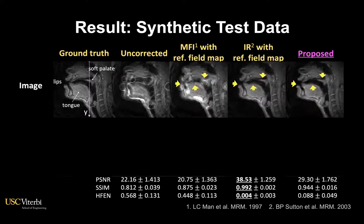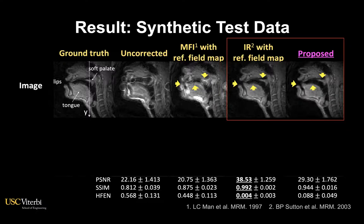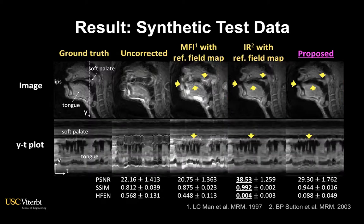We apply different existing methods to this test data. The proposed CNN method successfully removes the blurring artifact in most regions and achieves visually comparable results to an ideal reconstruction method based on the ground truth field map. Looking at the k-t plot, the proposed method exhibits a sharp boundary between tongue and air as well as around the soft palate, and this is found to be consistent over time.